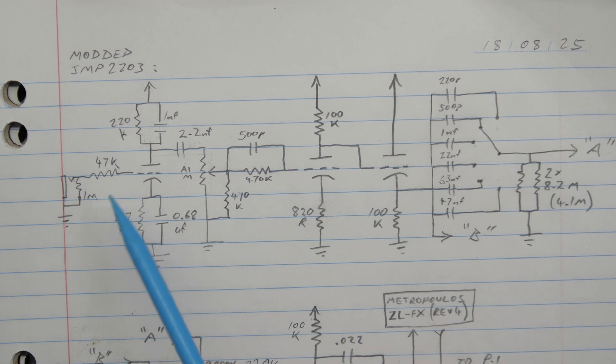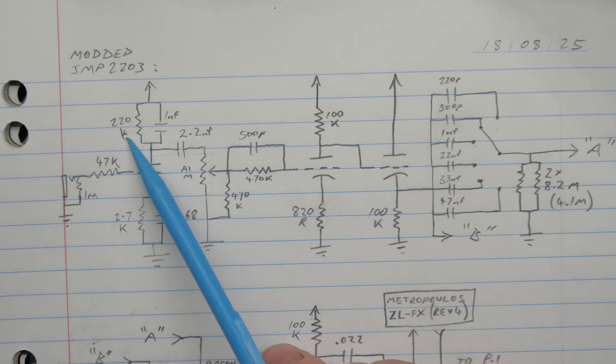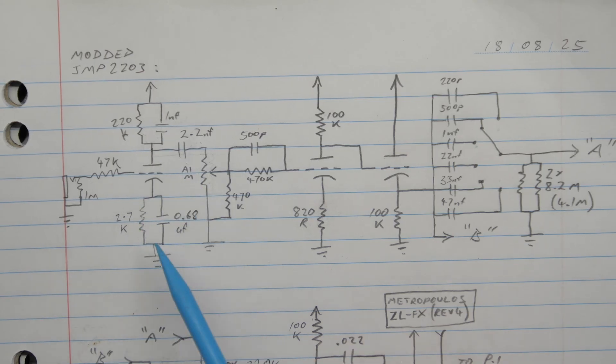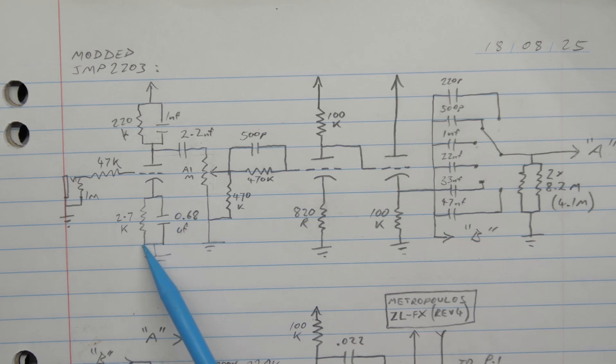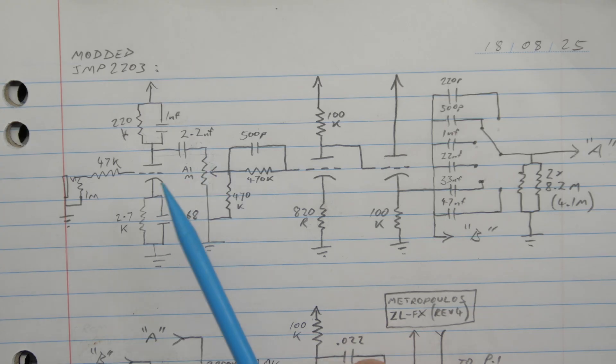So here's the schematic of the amp as it came in. 47k grid stopper, single input jack, 220k plate load, 1 nanofarad silver mica across that. Maybe they were having stability issues, oscillation, that kind of thing. The cathode's your typical Marshall input stage, 2.7k and 0.68 microfarad.